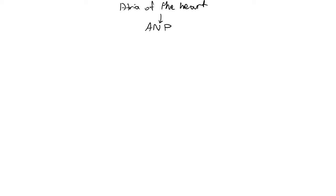Atrial natriuretic peptide, like the renin-angiotensin-aldosterone system, has four main effects on the body, and these effects are pretty much antagonistic to what angiotensin 2 does in the renin-angiotensin-aldosterone system.